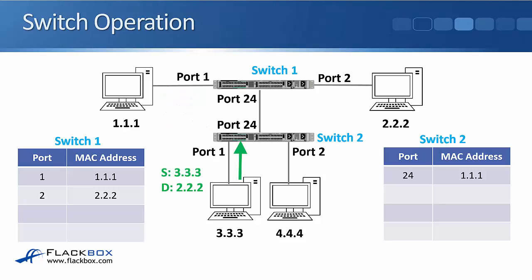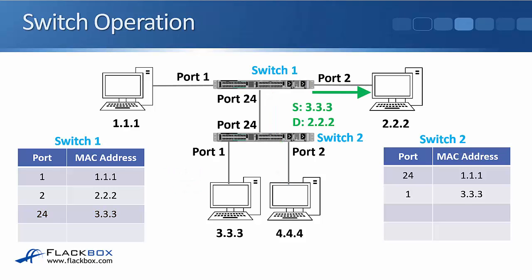Next, source 3.3.3 sends a frame to destination MAC address 2.2.2. That hits switch 2 and it will update its MAC address table to say that host 3.3.3 is reachable on port 1. Switch 2 will then forward that frame out all ports because the destination MAC 2.2.2 is not in its MAC address table — it's unknown unicast — so it will send it everywhere. That will hit switch 1, which will see the frame arriving on port 24 with a source MAC of 3.3.3, so it will put that information in its MAC address table. It will then send the frame out port 2 to the destination 2.2.2 because it already had that in its MAC address table.